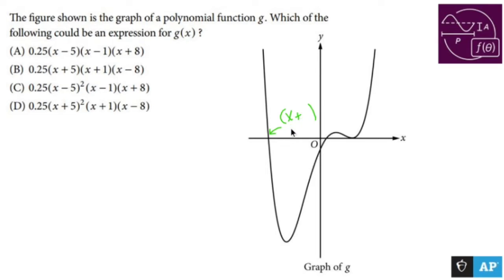If you're using the zero product property and you're factoring stuff and you set an x plus a number equal to zero, you're going to get a negative number for a root. So this is going to be x plus something.